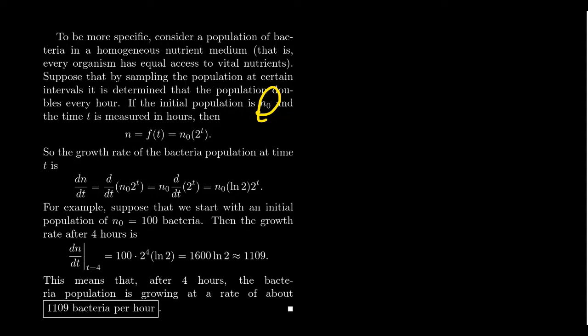So if the growth rate of the bacteria population at time T, what would that be? Well, it's going to be DN over DT. We take the derivative of this function right here, which we know how to calculate the derivative of an exponential function.